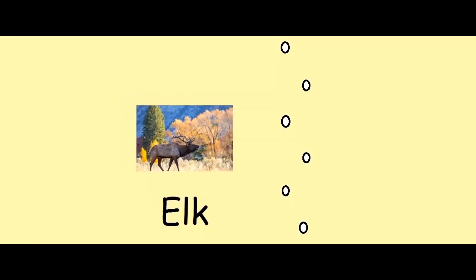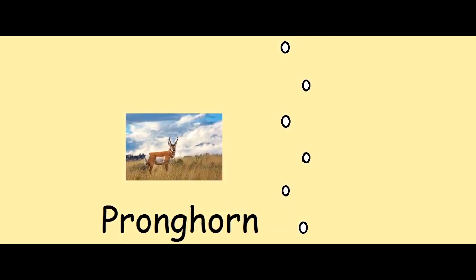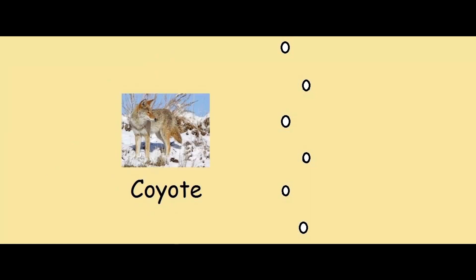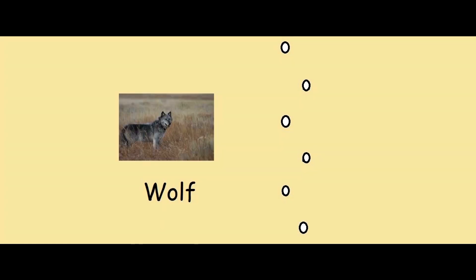So in other words deer, elk, moose, pronghorn — and all canines. So the fox, a coyote, and a wolf all use this gait.